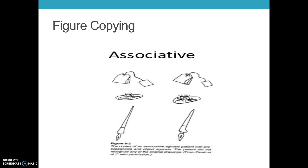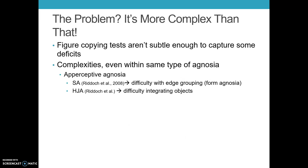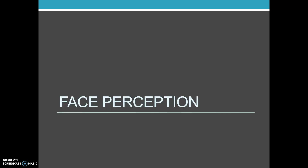While patients with associative agnosia can copy but won't identify what they've drawn, figure copying tests may not be subtle enough to capture all deficits. Not everybody who has agnosia has the exact same type of damage. Riddick and colleagues in 2008 reported two different types: one patient had difficulty with grouping edges together — known as foremagnosia — and another patient, HJA, had difficulty integrating multiple objects. Object recognition is much more subtle than we tend to think.